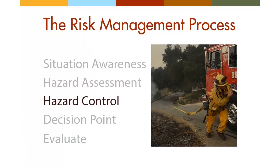After hazard assessment is hazard control. This is where you begin working out mitigating strategies for the potential dangers you've identified. Remember to maintain agility in your strategy — all actions need to be taken in light of the fire's behavior, which can easily change. Agility means considering all your tactical options and having several contingency plans in place. The acronym PACE can help you remember to make a primary, alternate, contingency, and emergency plan.